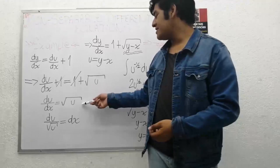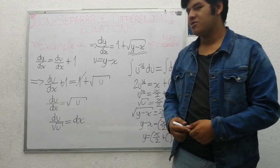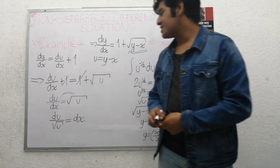We already have a separable differential equation: du over dx equals square root of u. Then, on one side we have the terms that depend on u, and on the other side, terms that depend on x.